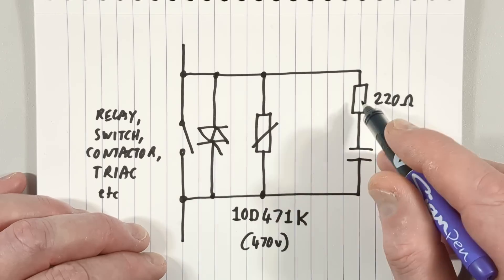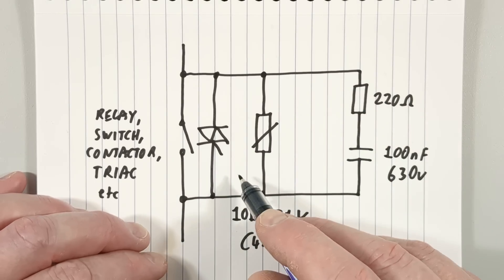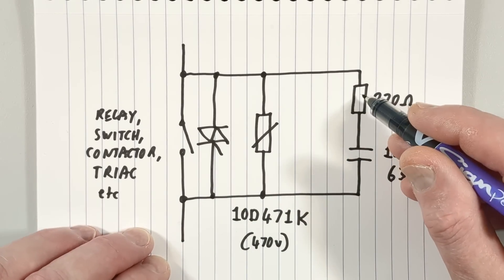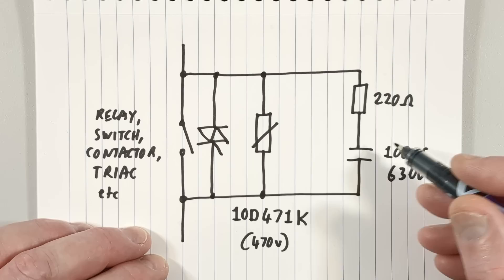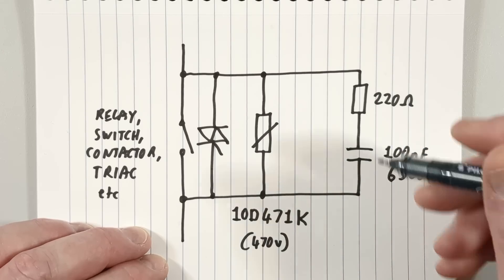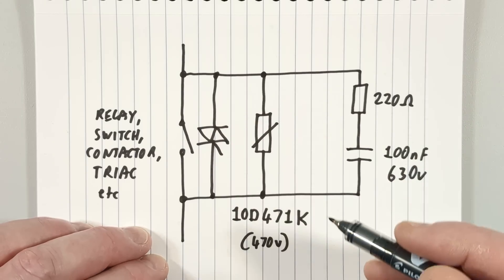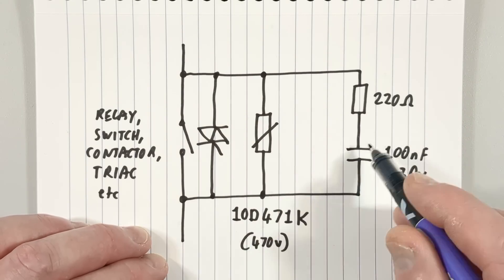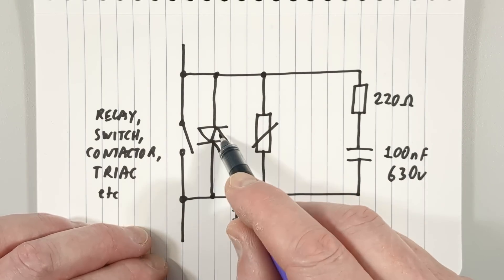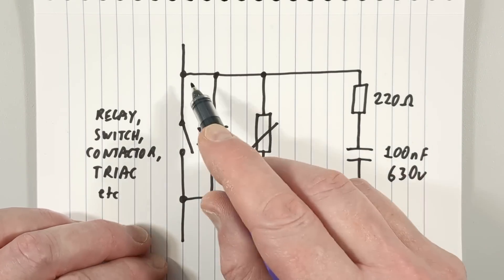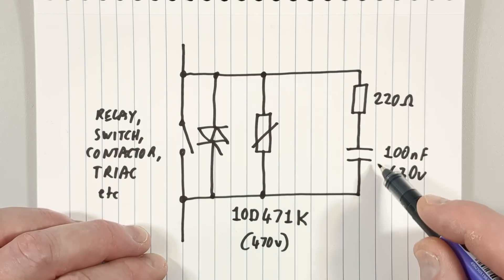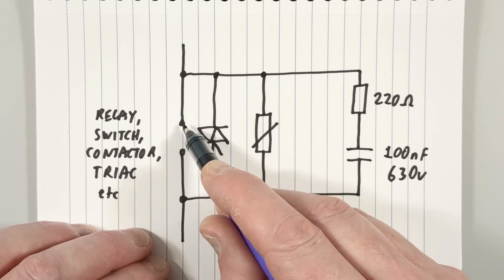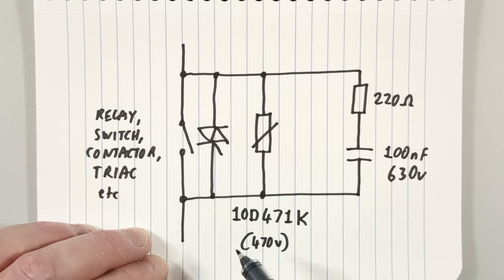That's where the snubber network can help. The reason there's a resistor in series with the capacitor is to limit the maximum current through the capacitor when it's quenching noise, but also to make sure that if a triac turns on or a switch closes at the peak of the sine wave, when the capacitor is fully charged, it doesn't cause a current pulse through the switching component.